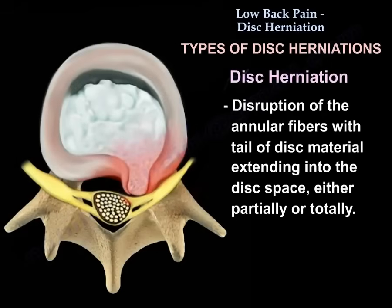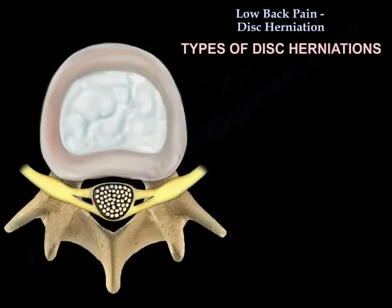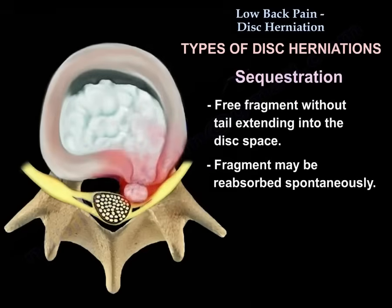Herniation involves disc material extending into the disk space, either partially or totally. The third type is a sequestered disk — a free fragment without a tail extending into the disk space. The fragment may be reabsorbed spontaneously.